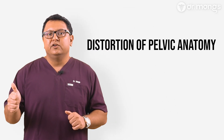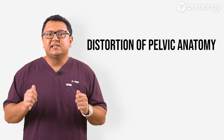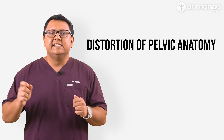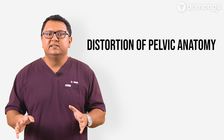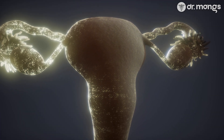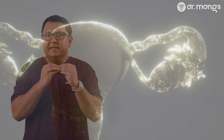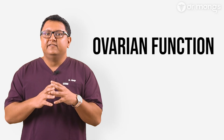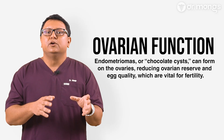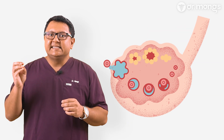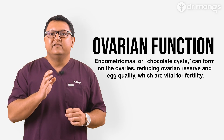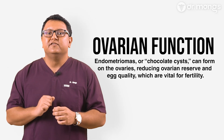Endometriosis can impact fertility in several significant ways. First, distortion of pelvic anatomy: adhesions or scarring caused by endometriosis can distort the normal anatomy of the pelvis, leading to blockages or misalignment of the fallopian tubes, making it difficult for the egg and sperm to meet. Ovarian function can also be affected by endometriomas, or chocolate cysts, which can form on or in the ovaries, reducing the number of healthy eggs, the ovarian reserve, and the quality of those eggs — both of which are crucial for fertility.